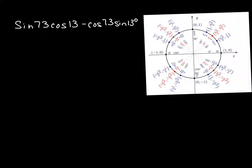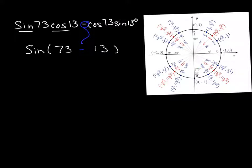This next question is the same kind, only backwards — we need to combine terms. Because we have sine and cosine in one term, this is the sine addition or subtraction formula. When it's sine, we keep the same sign in between. This just becomes the sine of (73° − 13°), and from the unit circle, the sine of 60° equals √3/2.